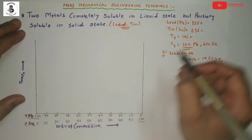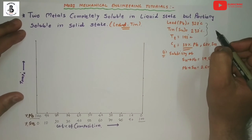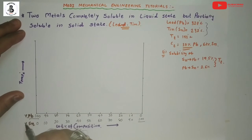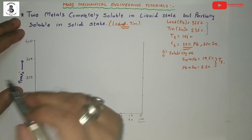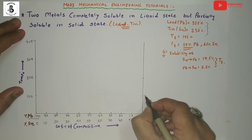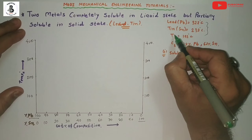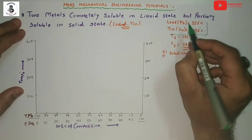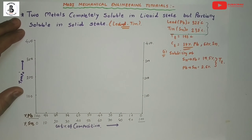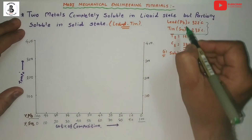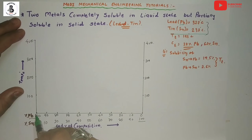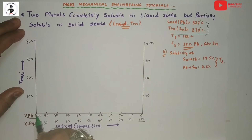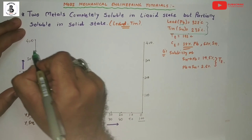On the temperature axis, according to the maximum temperatures of lead and tin, we make a scale with 100, 200, 300, and 400 degrees. According to the given melting point conditions for Pb and Sn, we mark a point for lead at 100% Pb, which has the same melting point and freezing point — that is 327 degrees Celsius.